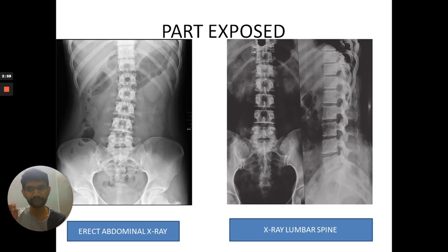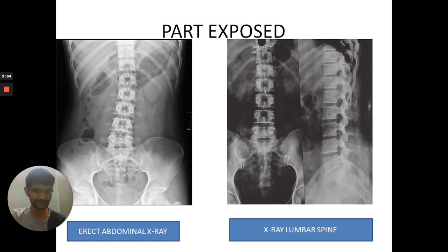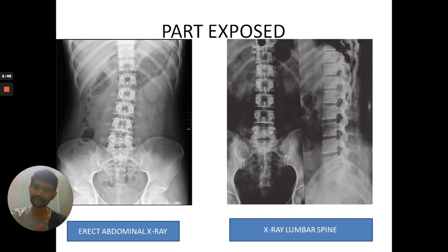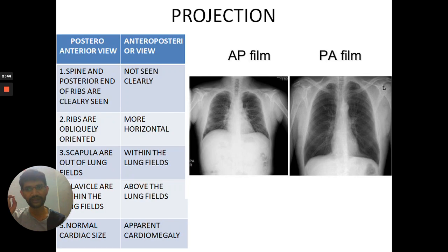Next comes the part exposed. As a pulmonologist, we usually get chest X-rays, but other parts that can be done include abdominal X-ray, X-ray lumbar spine, or X-ray cervical spine. Always check for the part exposed.